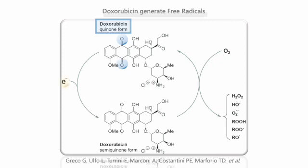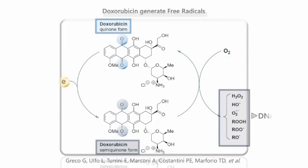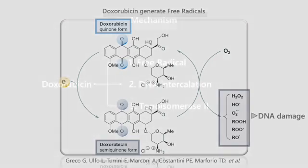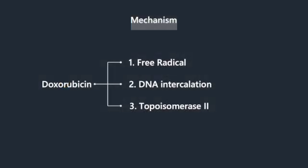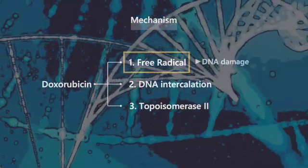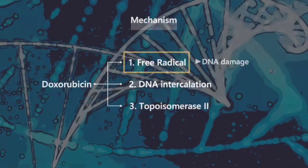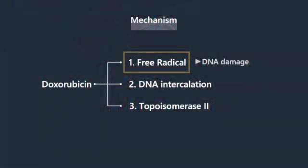First, doxorubicin generates free radicals, which may cause oxidative stress, resulting in DNA damage and cell death. Doxorubicin generates free radicals and causes DNA damage and cell death.